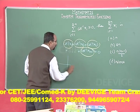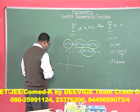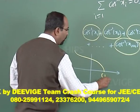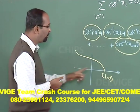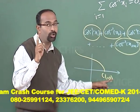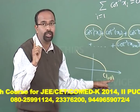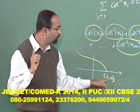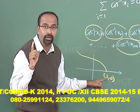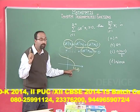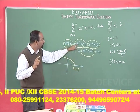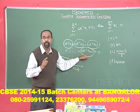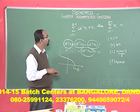You can understand this better from the graph. The point (1, 0) on the graph shows cos⁻¹(1) = 0. Students, don't get confused: cos⁻¹(0) = π/2, whereas cos⁻¹(1) = 0. So each and every xᵢ is equal to 1.